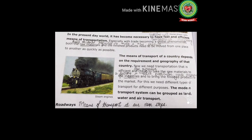Raw material means basic material required to make a new product. These days, to have business with other countries we need to go from one place to another, and to move we need efficient and fast means of transportation so that we can transfer our raw materials and finished products from one place to another as quickly as possible.